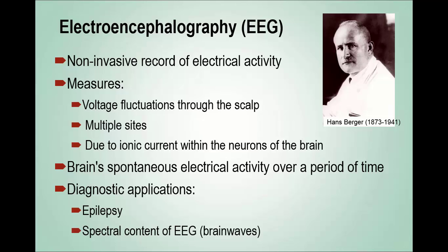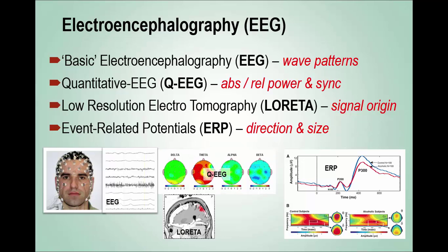EEG has been used most extensively to assess abnormal spontaneous electrical activity in the brain as an indication of seizure disorders or epilepsy. Access to computer processing has now made it possible to measure the various frequencies represented in brain waves, and to obtain information about their most likely points of origin as well as functional interconnections in the brain. There are now several derivations of EEG: the basic EEG looks at wave patterns; BEAM or QEEG looks at the distribution and power of different wave frequencies; low-resolution electrotomography, or LORETA, produces 3D maps of the origin of electrical signals; and event-related potentials, or ERPs, evaluate the direction, speed, and resistance of electrical wave transmissions across brain regions.